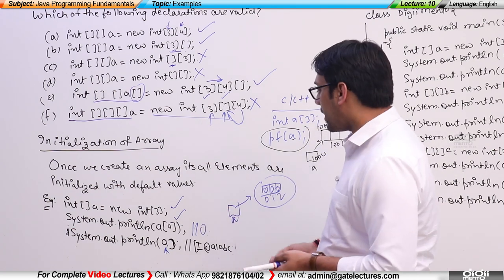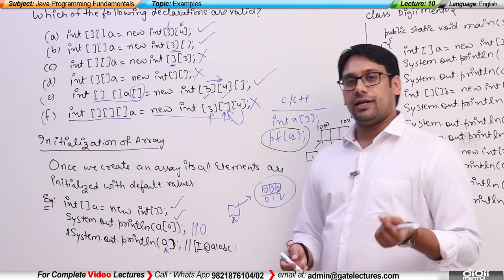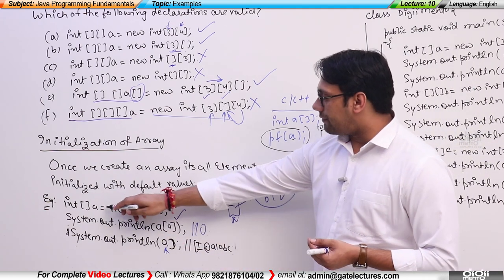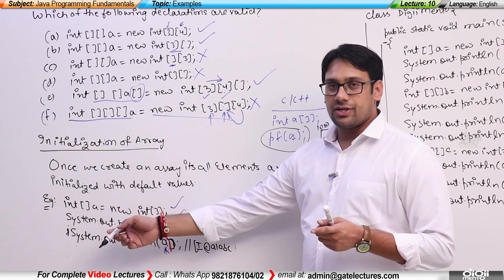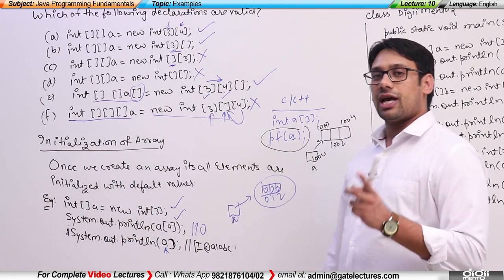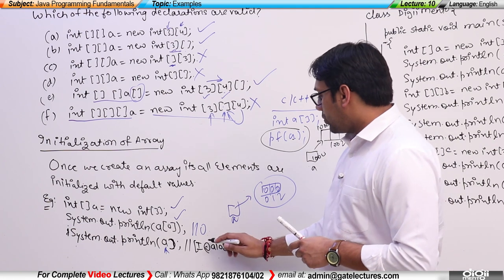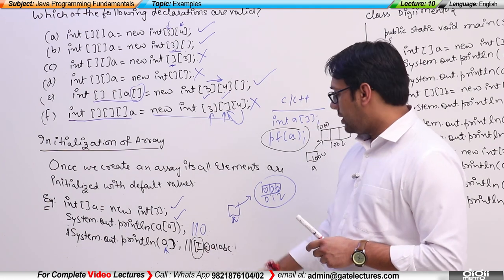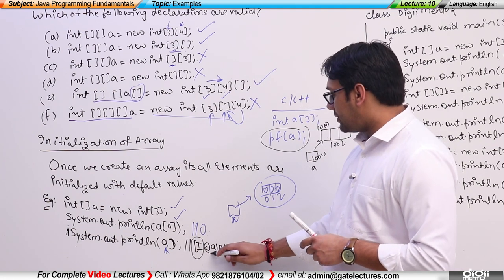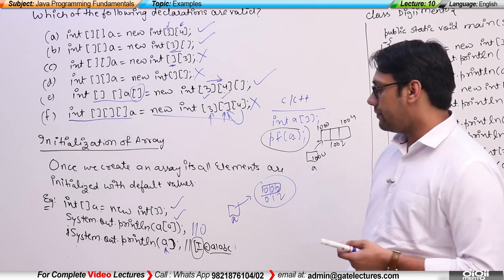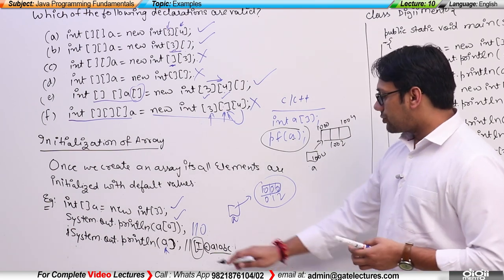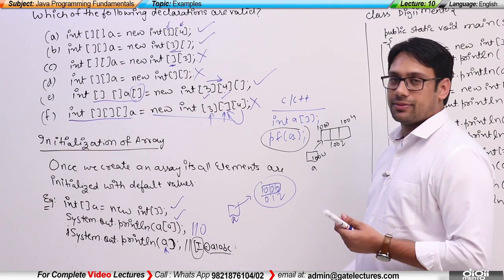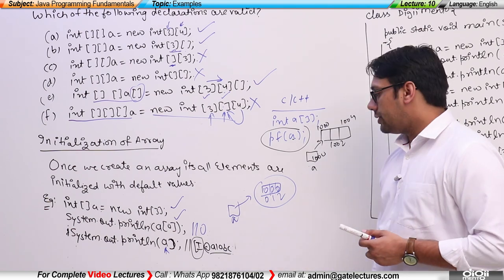In Java, arrays are declared as a class. Because it is a one-dimensional integer array, there is a class for it — represented as '[I' — so System.out.println(a) is going to print something like '[I@' followed by some hash code.